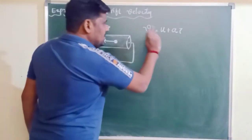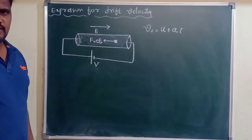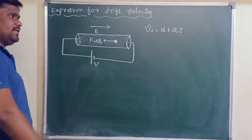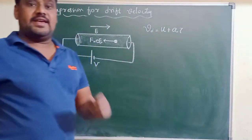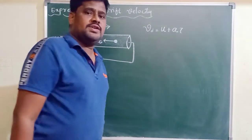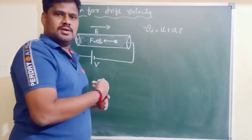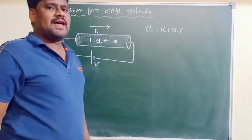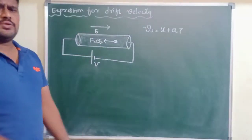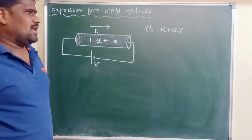Here, u is the net initial velocity of free electrons before applying the potential difference. A is the acceleration of free electrons in the conductor. Tau (τ) is the relaxation time — the time interval between two successive collisions of free electrons with positive ions. That was also discussed in the last class. I will call this equation number 1.